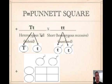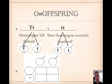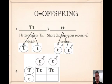Then we set up the Punnett square: put the sperm on the top and the eggs on the side. The next step is to figure out the offspring by fertilizing them — we go across and down, across and down. Notice that the capital letter goes in front: big T little t, and then little t little t. Then we can figure out what the offspring are.